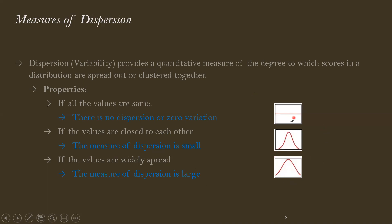For example, the measure of variation when all values are the same is zero. When slightly spread it might be around 2.0, and when widely spread it could be around 10.0. So the more closely clustered the data, the smaller the quantitative measure of dispersion. The more widely spread the data, the higher the value of dispersion. Returning to the body weight data, both groups have the same mean but one dataset is less clustered than the other.